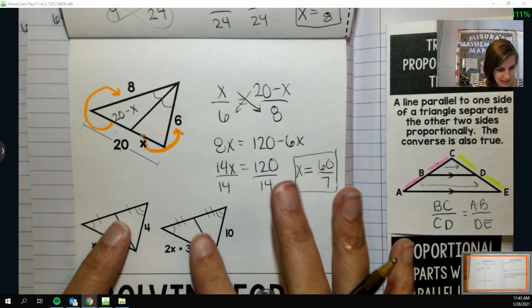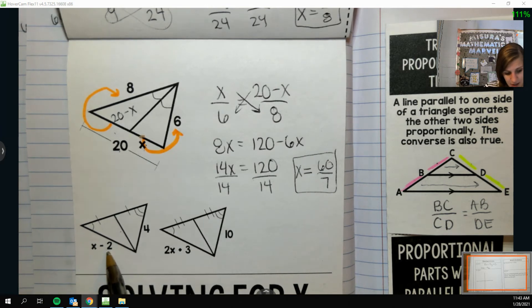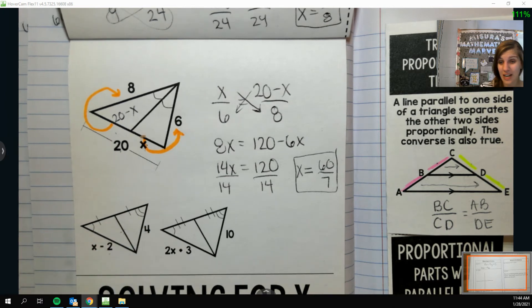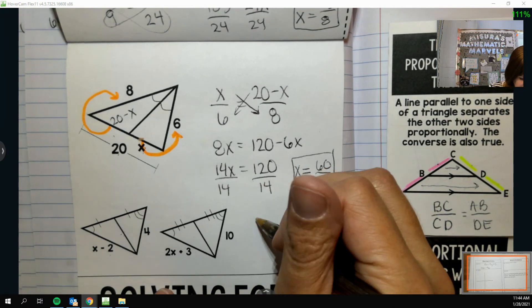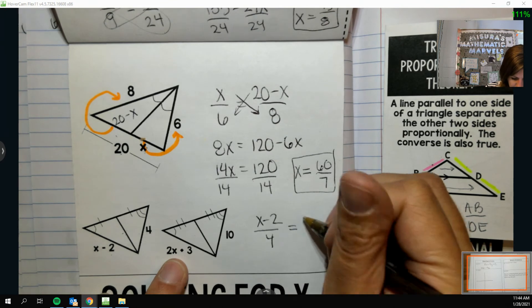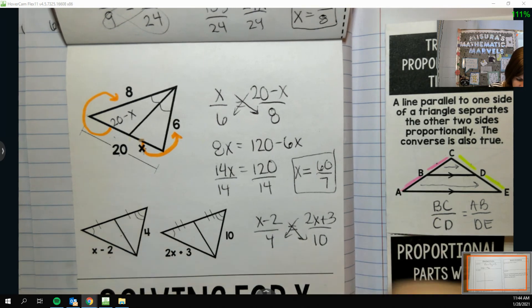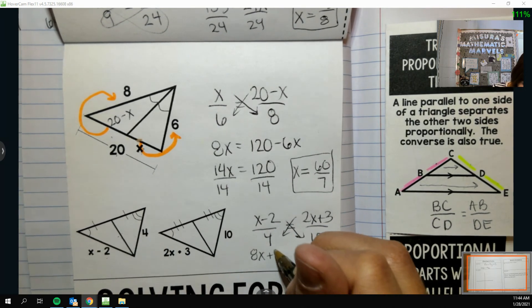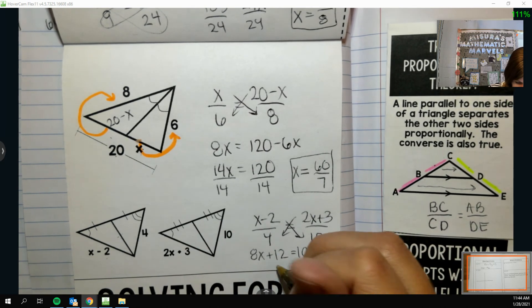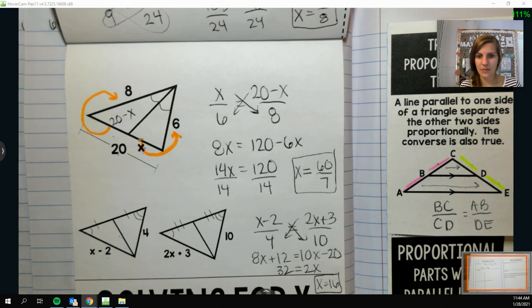And then right here, I notice medians again. So this one's a little different though. Because you can write median over side, median over side, but since they're both proportional to the median, you can write side over side, which is kind of crazy. So like, x minus 2 over 4, and I went this way, so 2x plus 3 over 10. And then cross multiply and solve. So we get 8x plus 12 equals 10x minus 20. So 2x equals 32. Ran out of room. So x is 16.